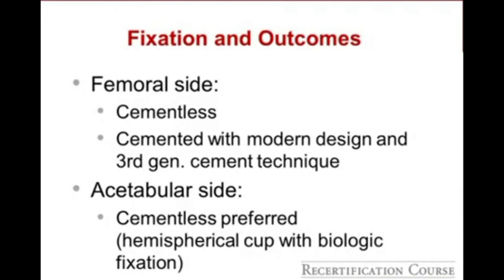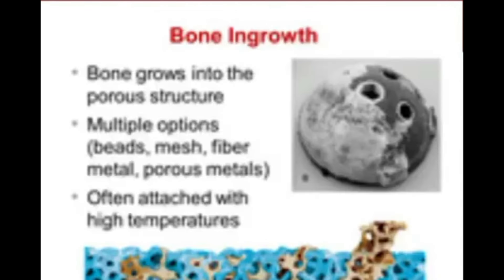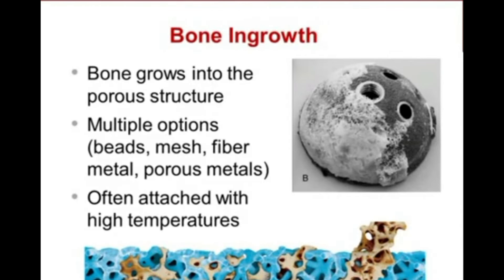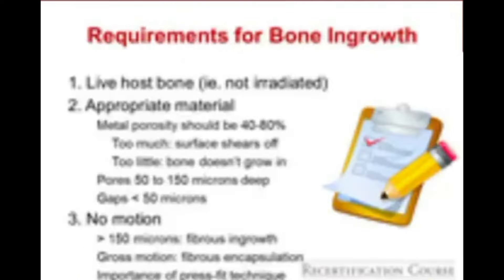On the femoral side, a cementless or well-done cemented femoral stem is acceptable. On the acetabular side, cementless fixation is preferred in the North American market, involving a hemispherical cup with or without screws. Bone in-growth or on-growth is critical to the success of a cementless technique — bone grows into the porous structure of the metal. Options include beads, mesh, or fiber metal, often attached to the cup using high temperatures.